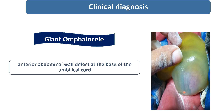This is a giant omphalocele because the herniated contents are intestinal loops and liver. While in a small omphalocele, only a few bowel loops of the intestine will be herniated. So the clinical diagnosis for this child will be giant omphalocele.